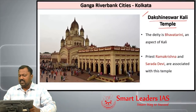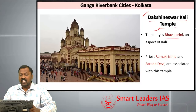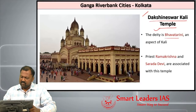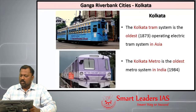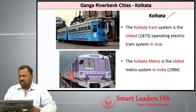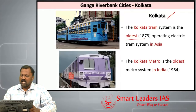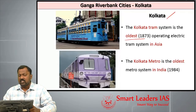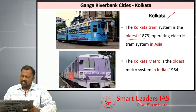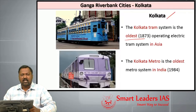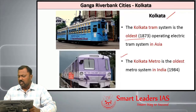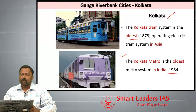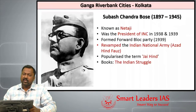Kolkata is also known for the Dakshineswar Kali Temple, where the presiding deity is Bhavatarini, an aspect of Kali. Ramakrishna Paramahamsa was the head priest here, and Sarada Devi is also associated with this temple. Kolkata has the oldest tram in Asia, established in 1873, still in service today — the only city in India with an operative tram. Kolkata Metro, established in 1984, is the oldest metro system in India.